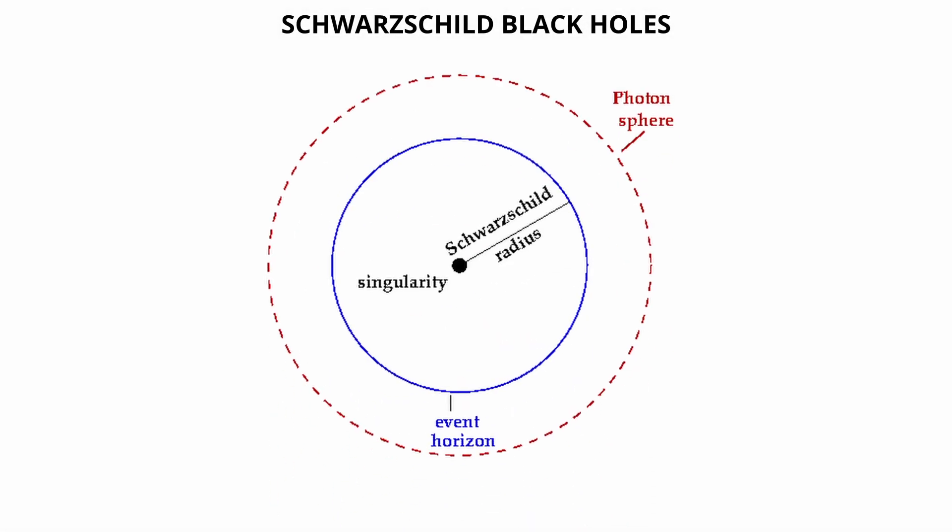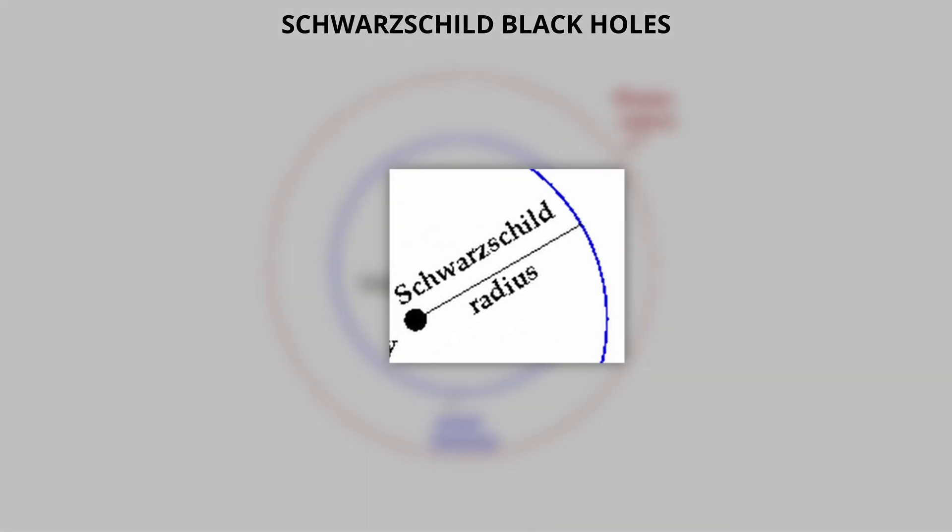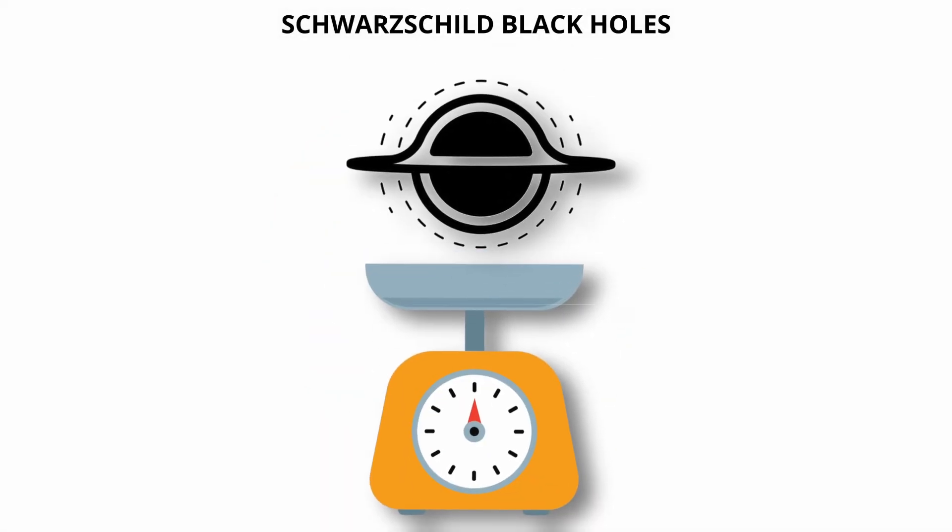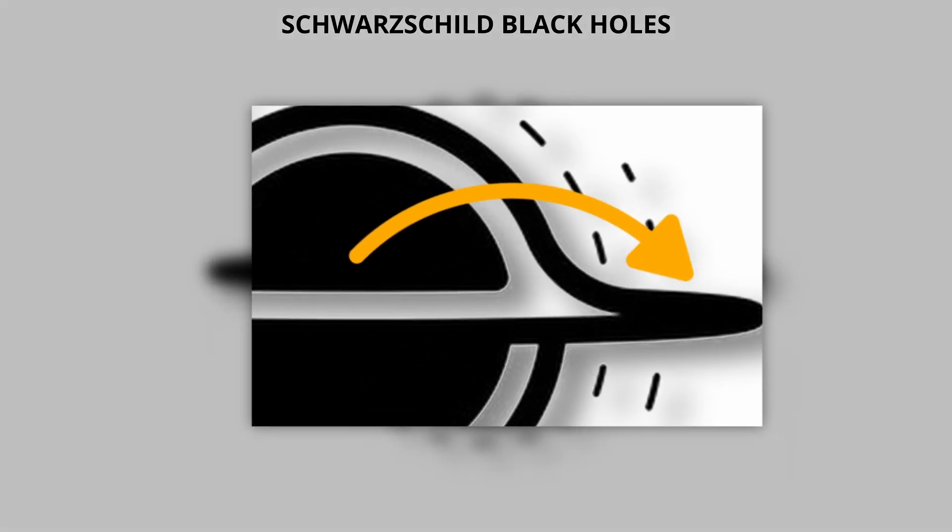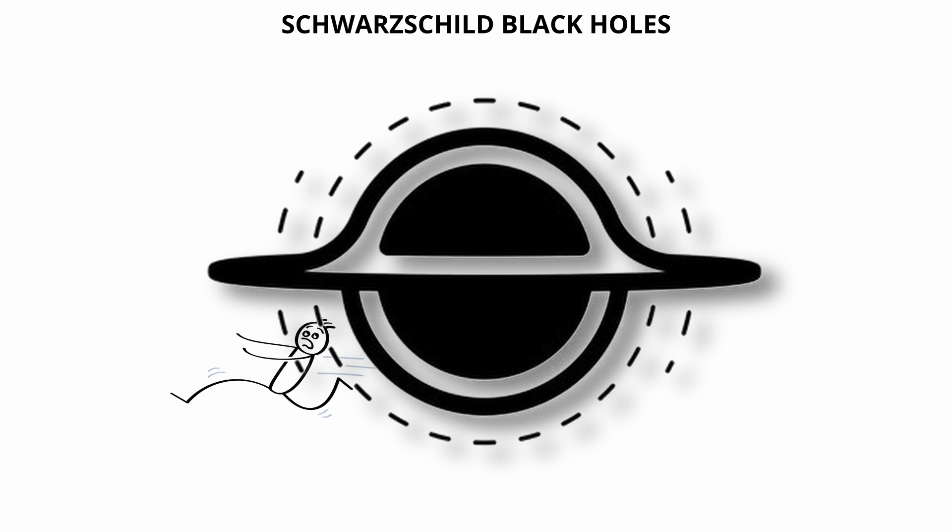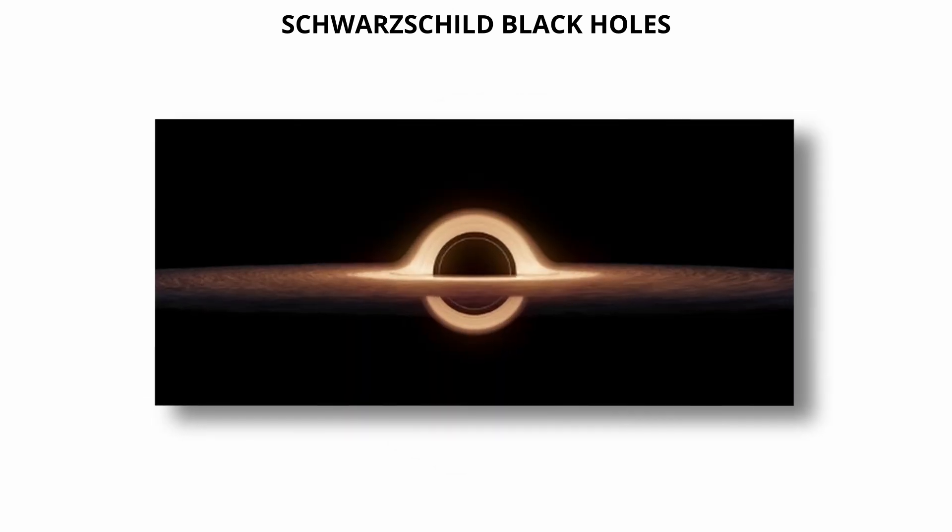The defining radius of a Schwarzschild black hole is known as the Schwarzschild radius. It depends only on the black hole's mass and represents the distance from the center to the event horizon. Any object compressed within this radius becomes a black hole.